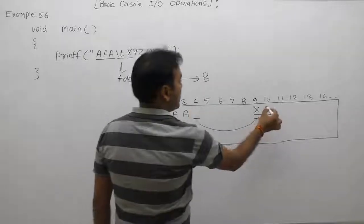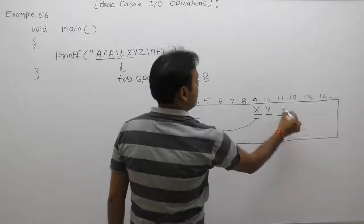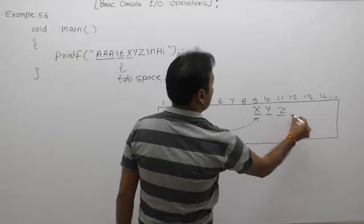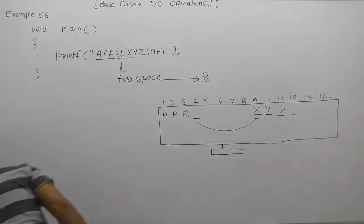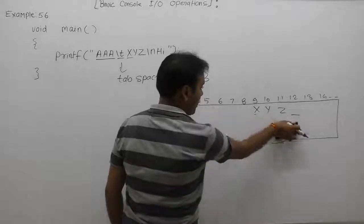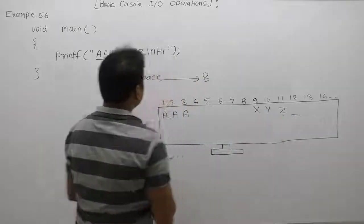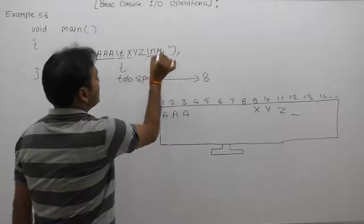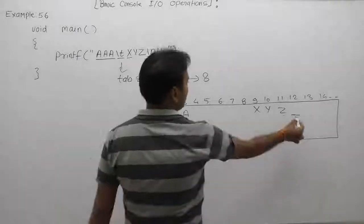It will print similarly Y, then Z. Then the cursor will be available at the twelfth position. After that, the next one is \n. According to \n, the cursor will be moved to the first position of the next line.